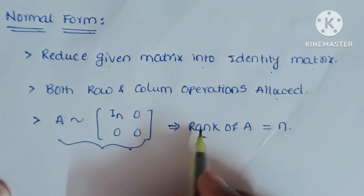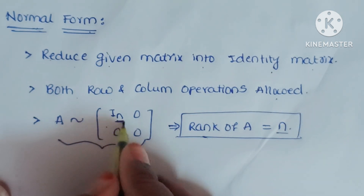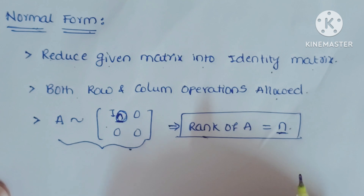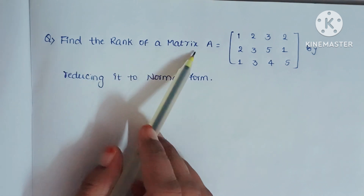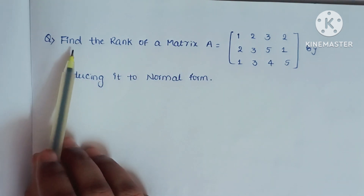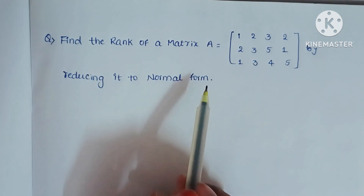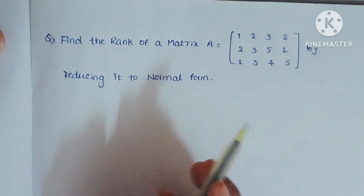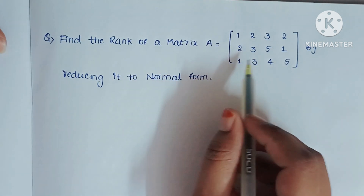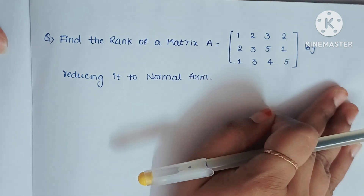Here, the rank of the matrix is r, where r represents the order of the identity matrix obtained. We will solve one example so that you can understand in a better way. Normal form is nothing but converting the given matrix into an identity matrix by using both row and column operations.